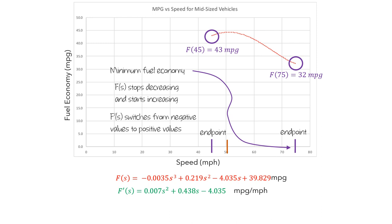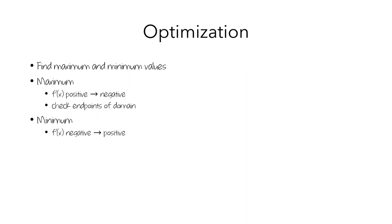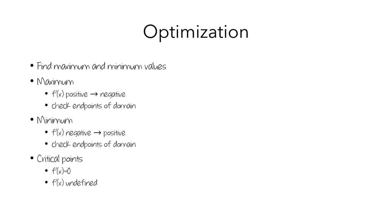To summarize: optimization is when you want to find maximum and minimum values of a function. The maximum value will occur when the derivative goes from positive to negative, and you might also need to check the endpoints of the domain. Similarly, the minimum value will occur when the derivative goes from negative to positive, and you might also need to check the endpoints. The places where the derivative switches between negative and positive are called critical points — where the derivative is 0 or potentially undefined. To find all potential maximum or minimum points, identify all critical points and endpoints, then determine which are maxima and which are minima.